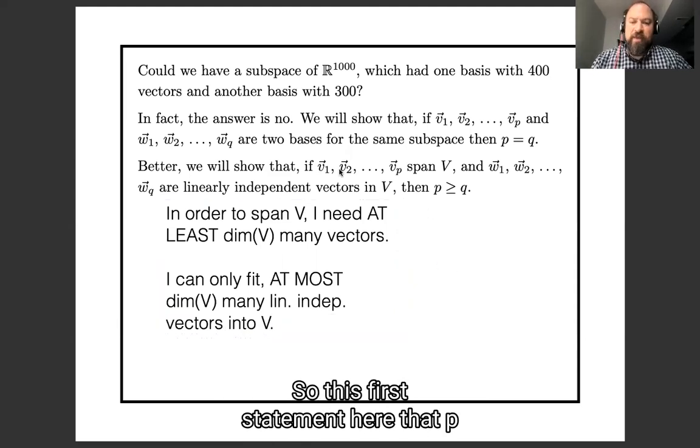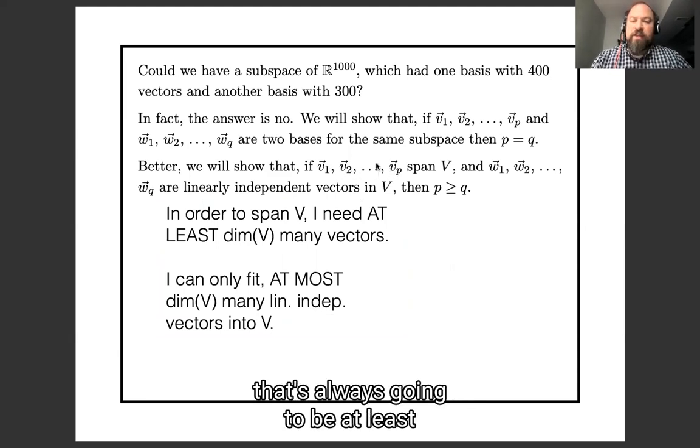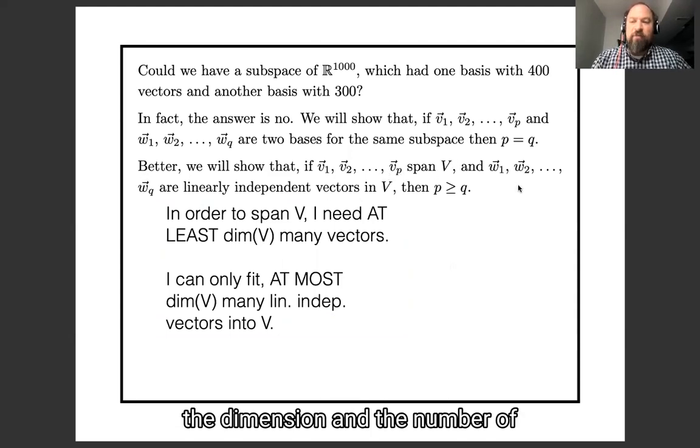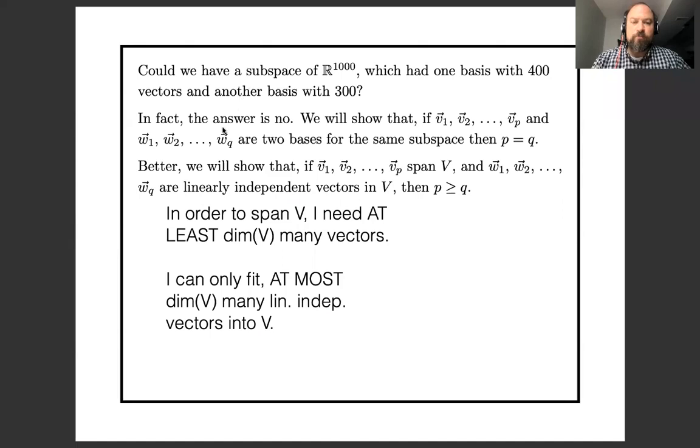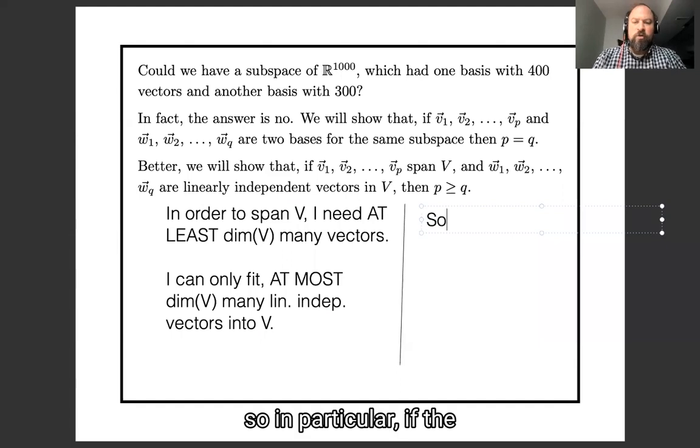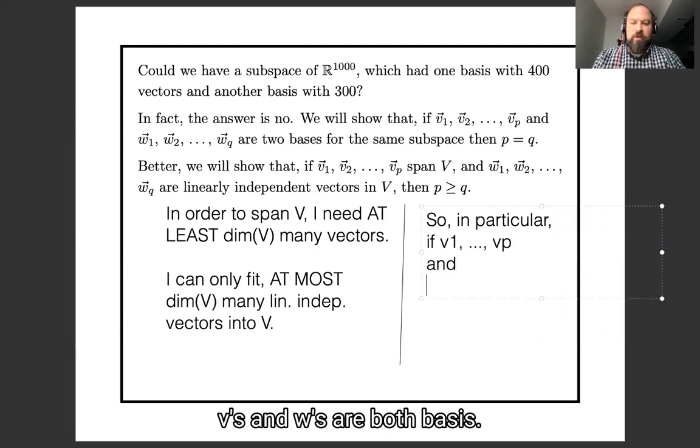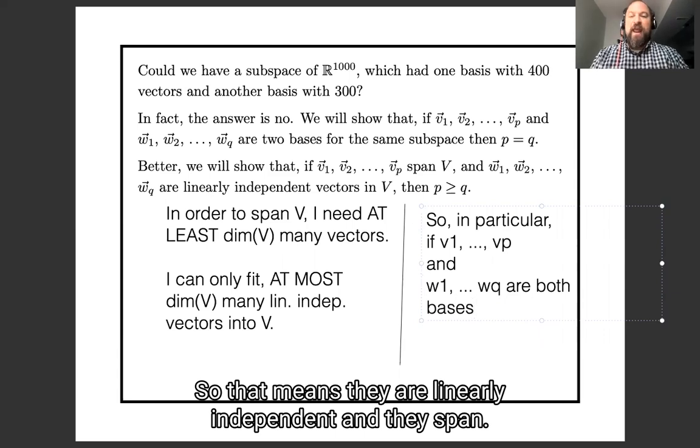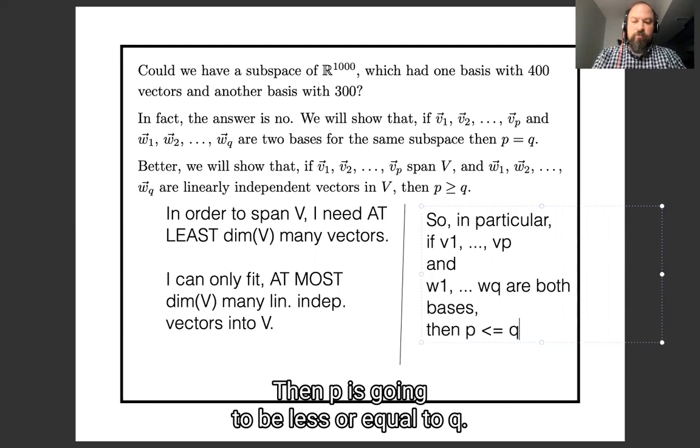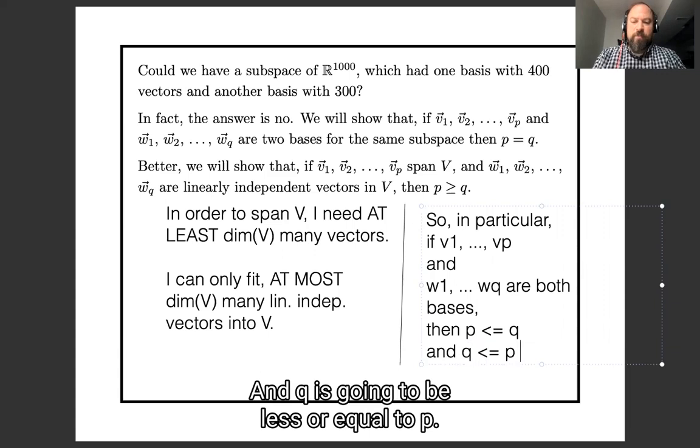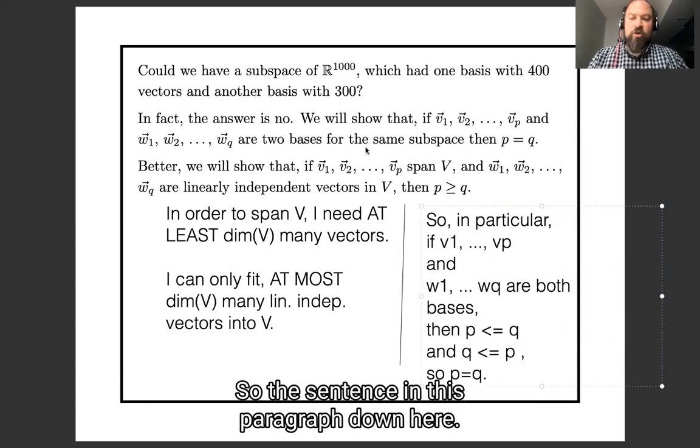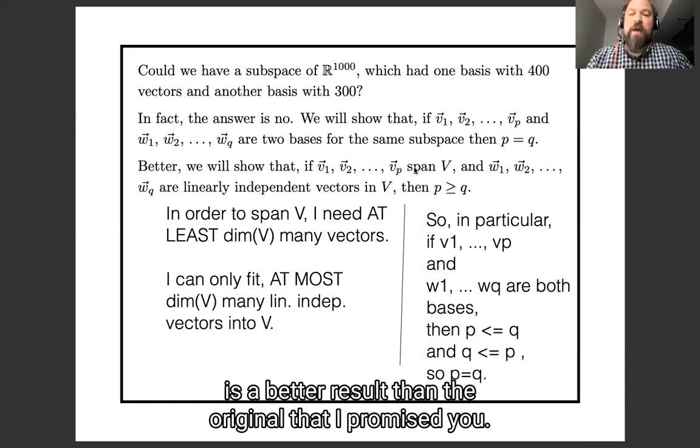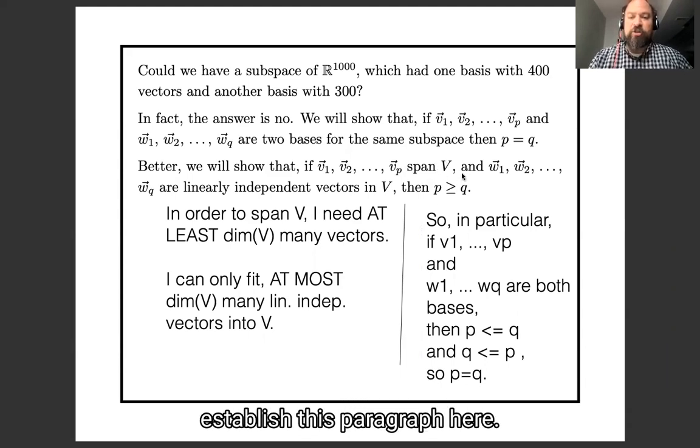And I can only fit at most dimension V many linearly independent vectors into V. So this first statement is saying the number of vectors I need to span is always going to be at least the dimension, and the number of linearly independent vectors I can find is going to be at most the dimension. And so in particular, if the v's and the w's are both bases, so that means they're linearly independent and they span, then p is going to be less or equal to q, and q is going to be less or equal to p, so p will equal q in that case. So this paragraph down here is a better result than the original one I promised you. And so my goal for this lecture is going to be to establish this paragraph here.